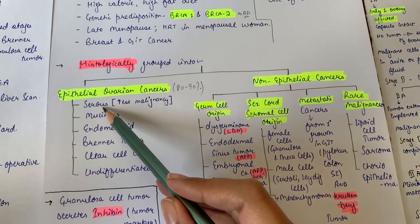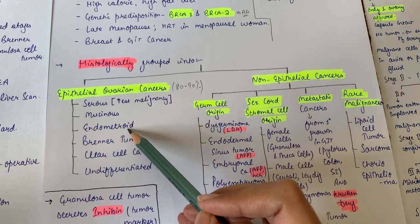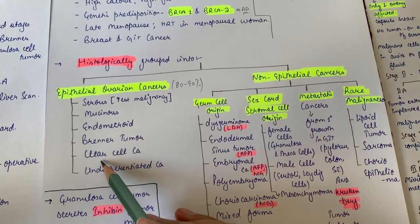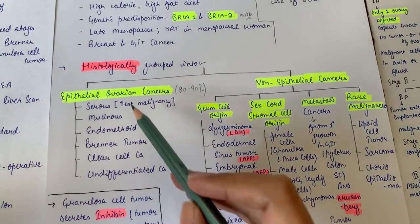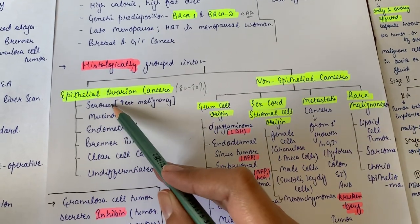Epithelial ones can be further divided into serous, mucinous, endometrioid, Brenner tumor, clear cell carcinoma, and undifferentiated carcinoma. Among these epithelial ovarian cancers, the highest malignancy is seen in serous type.